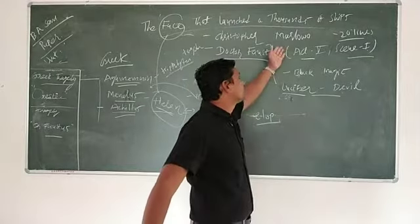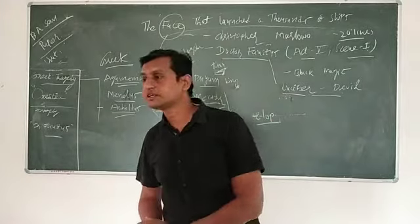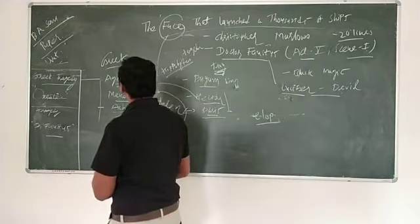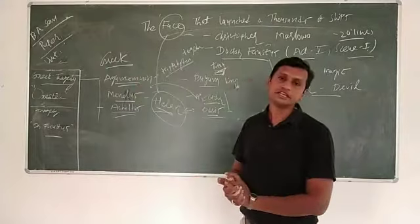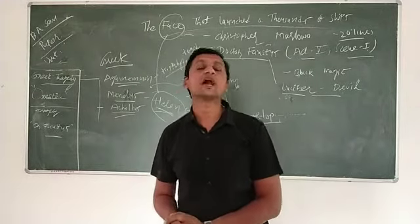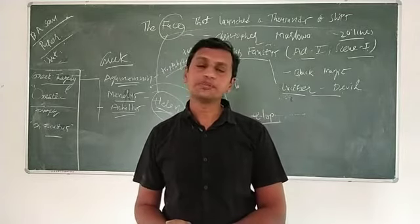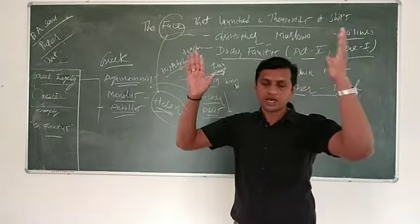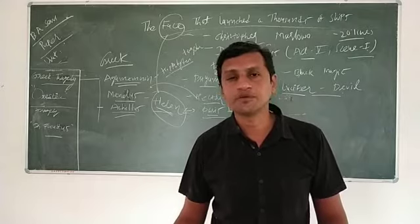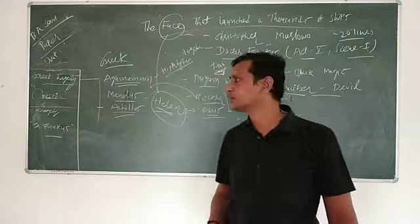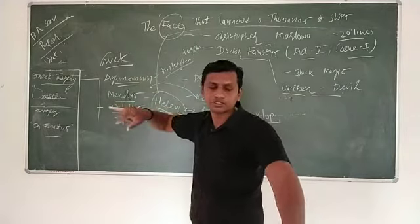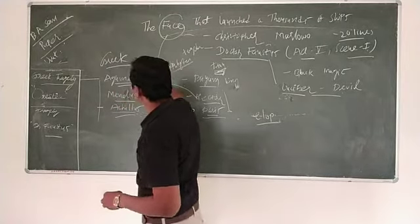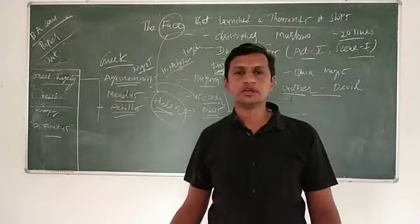Oresteia is written by Aeschylus, a great tragedy. In this tragedy, there was the first part called Agamemnon, second part called the Choephori, and third part called the Eumenides. In the story, it was a very large poem, just like epic. In this, the last chapter features Agamemnon, the King.